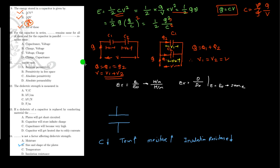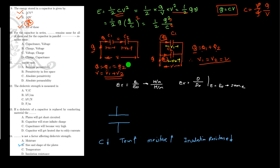For capacitors in series, charge remains the same for all of them; for capacitors in parallel, voltage remains the same. In series: Q₁ = Q₂ = Q and V = V₁ + V₂. In parallel: Q = Q₁ + Q₂ and V₁ = V₂ = applied voltage. So charge remains the same in series and voltage remains the same in parallel. Option B is correct.